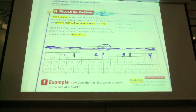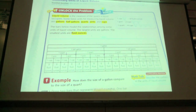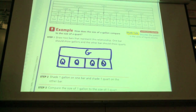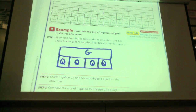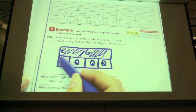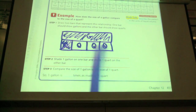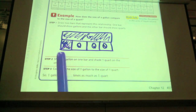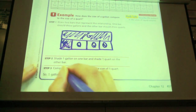Anybody who had two — do you guys see that? If we draw it to represent it on a bar model, we'd shade one gallon and shade one quart. Now I can look at my model and compare. One gallon is how many times as much as one quart? Four.